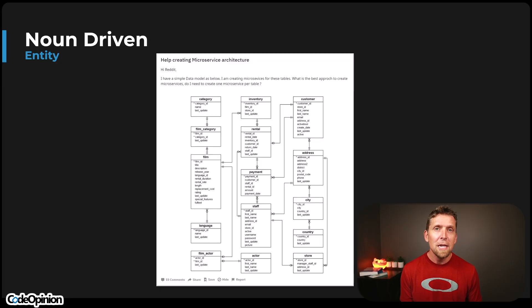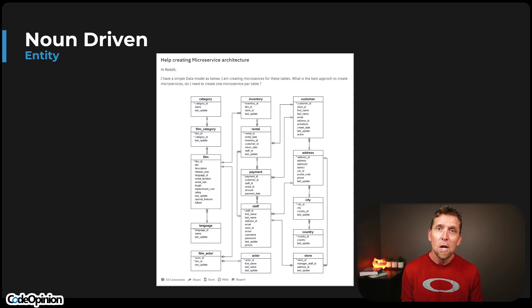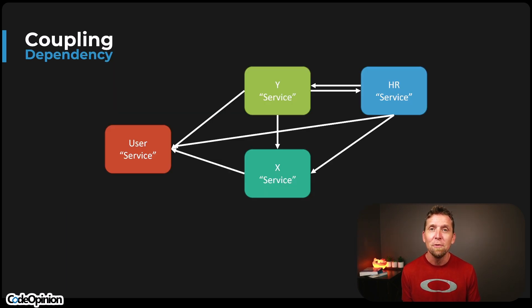You'll notice I've been using the word process — like the hiring process or the recruitment process — because they're business processes. That's a part of these business capabilities. I haven't been talking about entities. In my opinion, a lot of the systems that are noun and entity-driven, more focused on that than actual capabilities, are brittle systems that are really hard to change, primarily because of coupling.